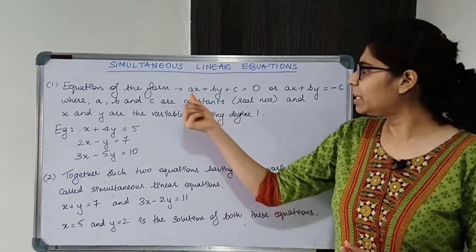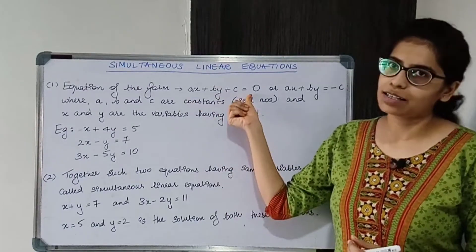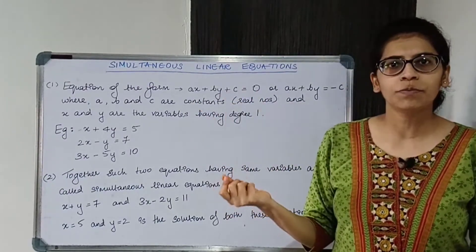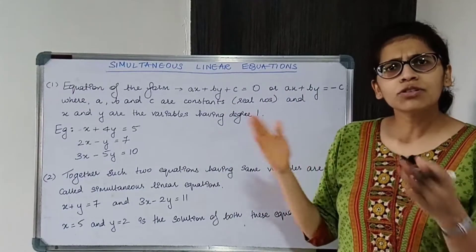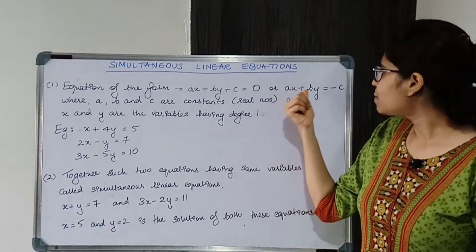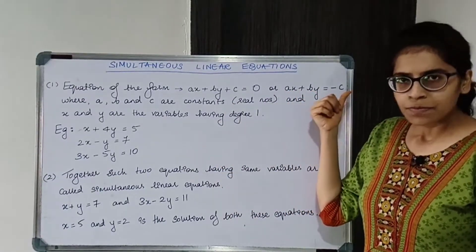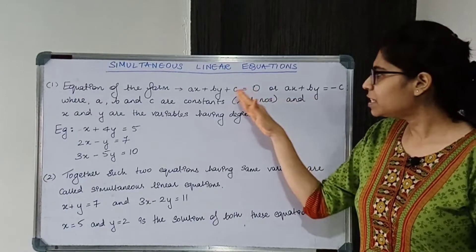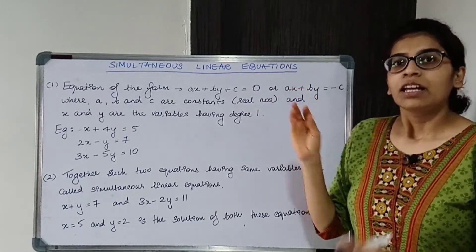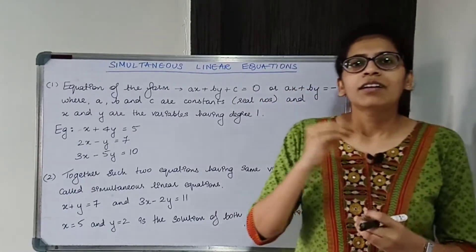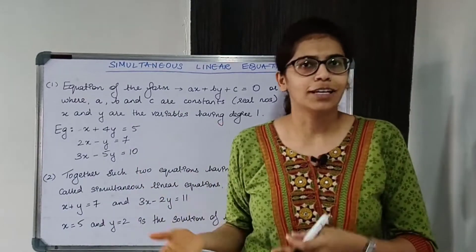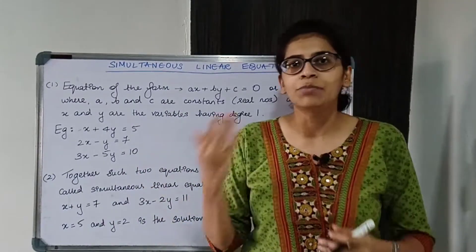So a linear equation has the standard form Ax plus By plus C equal to 0. You can also rewrite it as Ax plus By equal to minus C, by shifting C to the other side. Now, what are A, B, and C? What are X and Y? What do they represent?